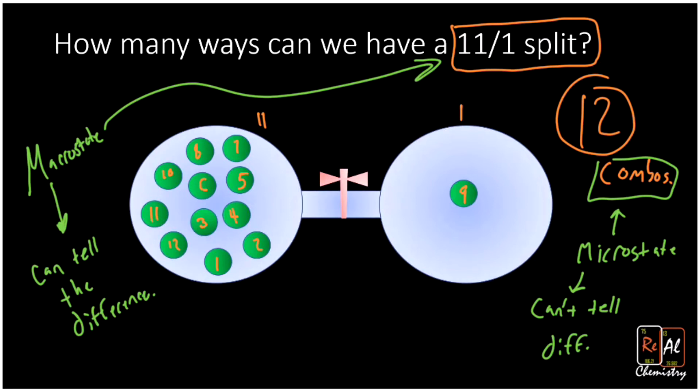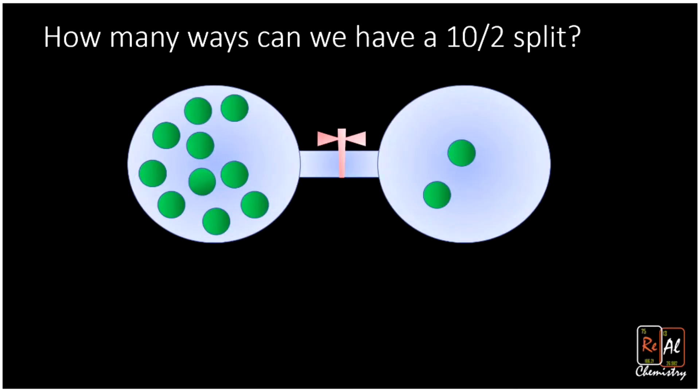So that's for 11-1. What about if we have 10 and 2? Well, that gets really complicated to count. In fact, I'll go ahead and tell you there's 66 different combinations, but counting those out is a real pain in the butt. So we have an equation to help us.